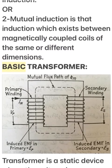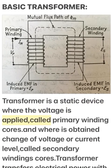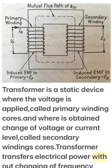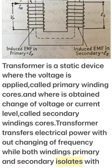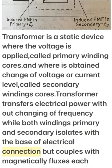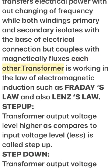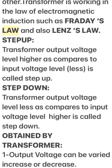Basic Transformer: A transformer is a static device where the voltage is applied — called primary winding — and where a changed voltage or current level is obtained — called secondary winding. A transformer transfers electrical power without changing frequency, while both windings (primary and secondary) are isolated in terms of electrical connection but coupled magnetically. Transformers work on the laws of electromagnetic induction: Faraday's Law and Lenz's Law.